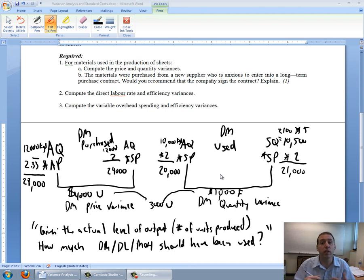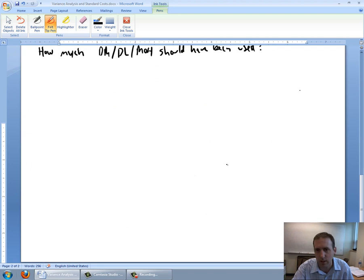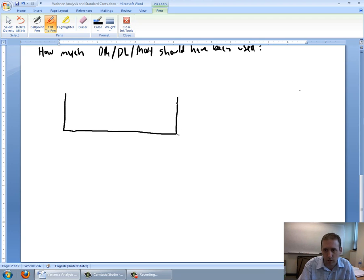Let's go ahead and work through the labor rate and efficiency variances for this problem, and as always, the problem is posted right below the video. It says compute the direct labor rate and efficiency variances. To do it, I'm just going to set up a little chart very similar to my materials one, only this time I won't do two separate prongs. I'm going to put them all together. So I'm going to do AQAP, AQSP, and SQSP.